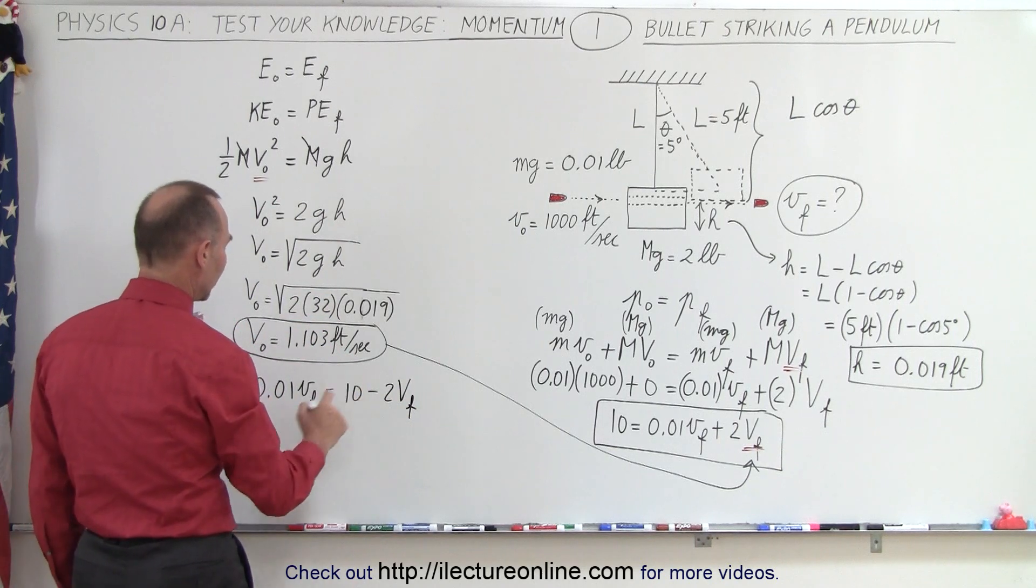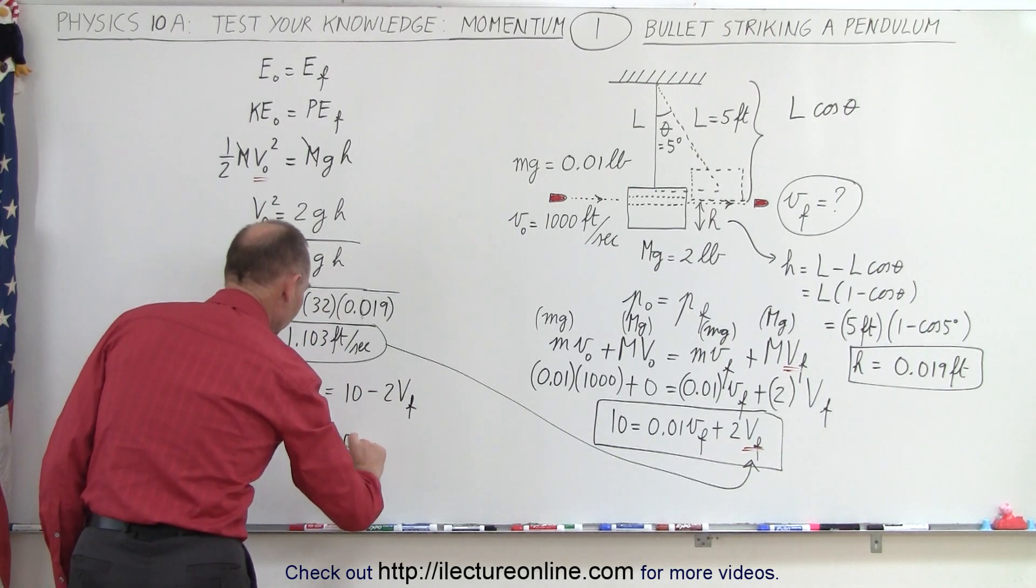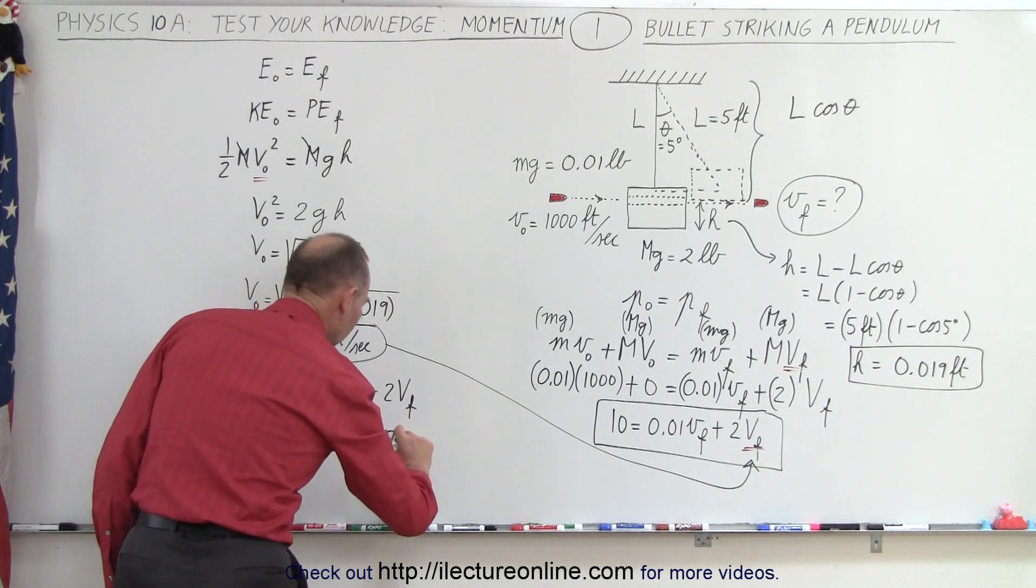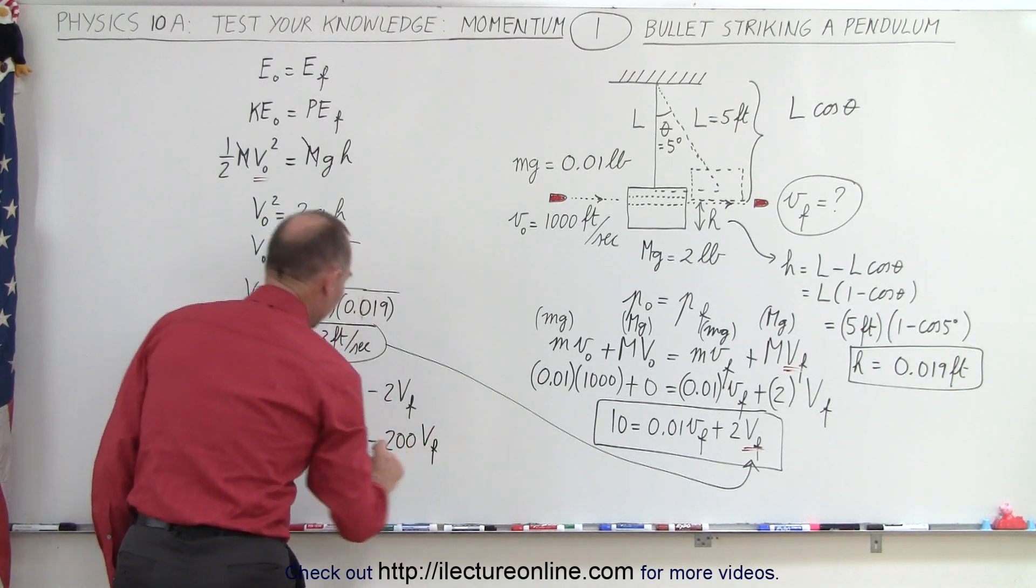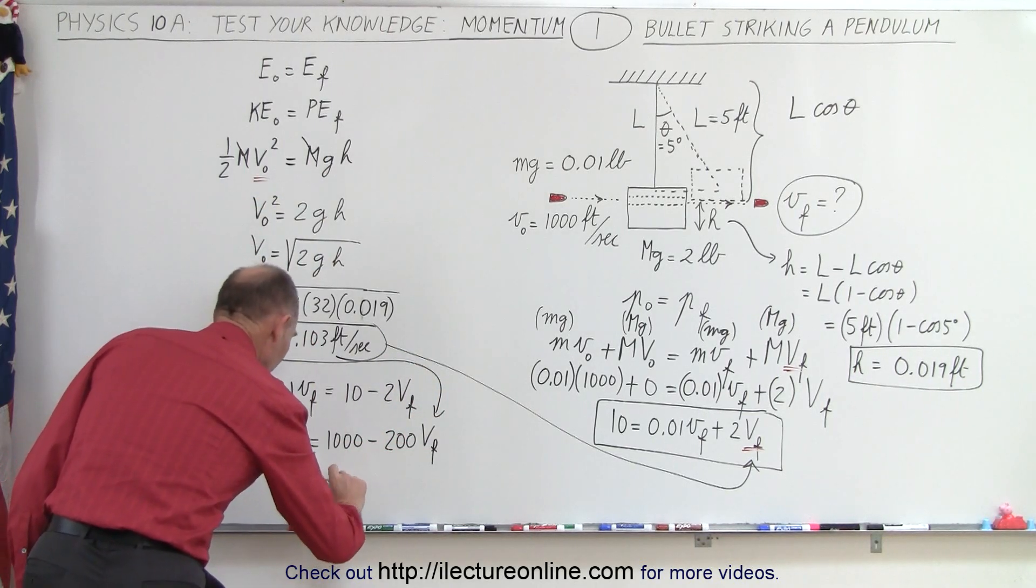Multiplying everything by 100, we can say V final is equal to 1000 minus 200 V final. We take this value, plug it in here.